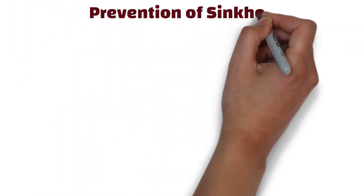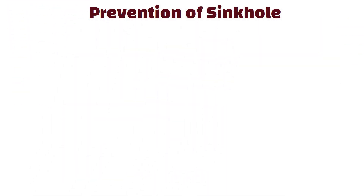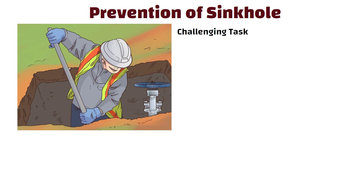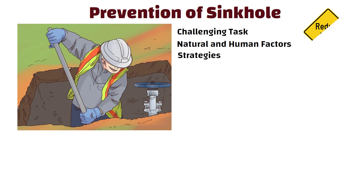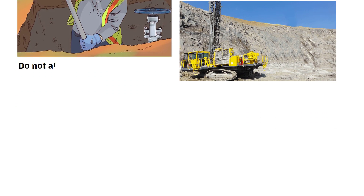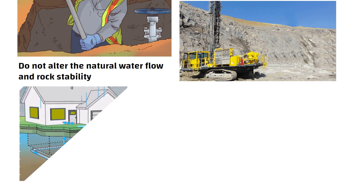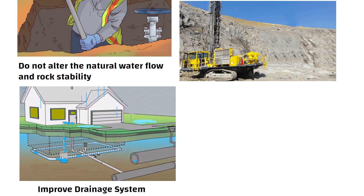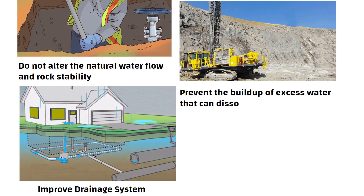Preventing sinkholes is a challenging task as they can be caused by both natural and human factors. However, there are some strategies that can help reduce the risk. One approach is to monitor and regulate human activities such as mining and drilling to ensure that they do not alter the natural water flow and rock stability. Another approach is to improve the drainage systems in areas prone to sinkholes to prevent the buildup of excess water that can dissolve the rock.